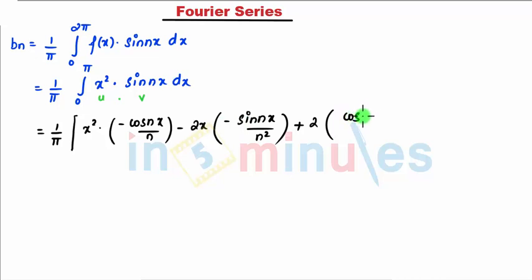again comes minus, so that becomes plus cos nx divided by n³, where my upper limit is 2π, lower limit is 0.